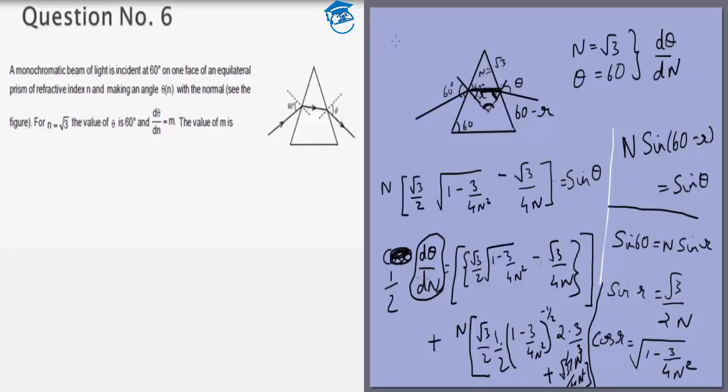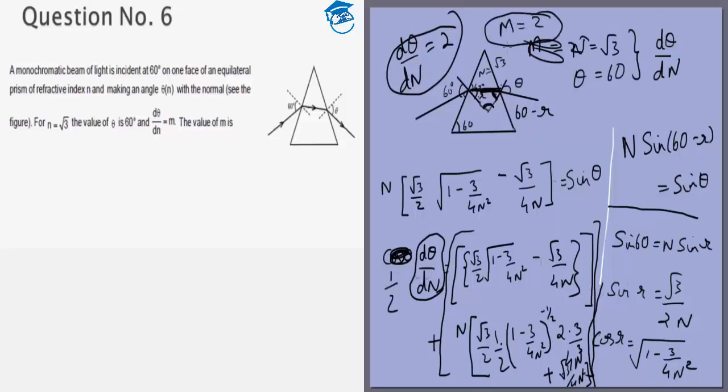And you can try to simplify it at home. I have given you the equation. All I need to do is differentiate this which I have written here. And the final answer will come out to be d theta by dn equals 2. Basically this is half of d theta by dn, so this whole thing on this side, if you put n equals root 3 this will come out to be 1 and you will get d theta by dn equals 2. So my final answer in this case is m equals 2. This is a slightly lengthy question compared to the others.